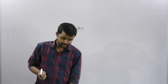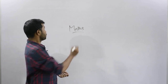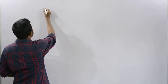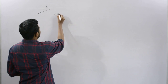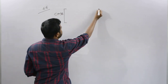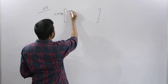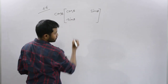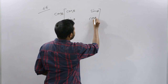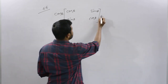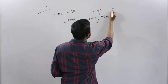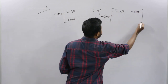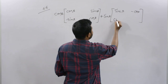Now we are going to go to exercise 3.2, question number 6. The question is: cos theta into (cos theta sin theta minus sin theta), plus sin theta (sin theta minus cos theta sin theta). This is a matrix.